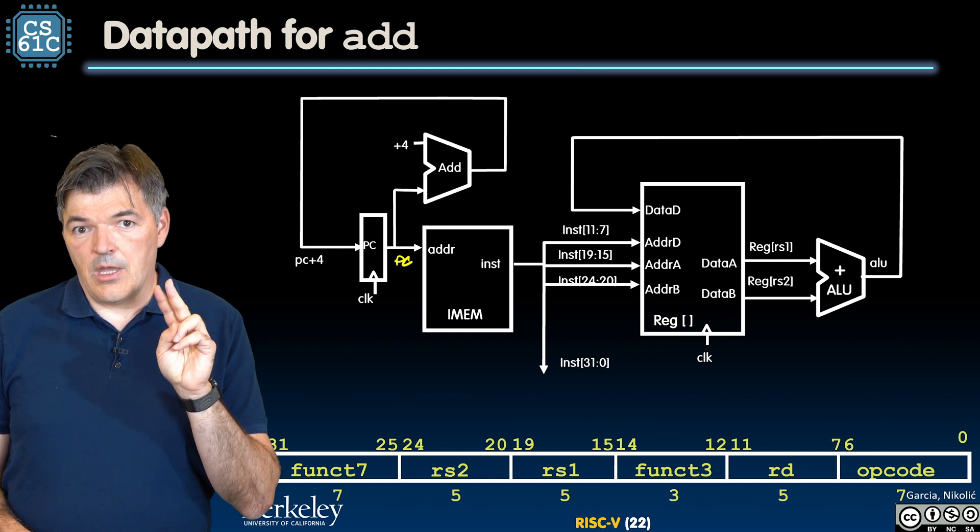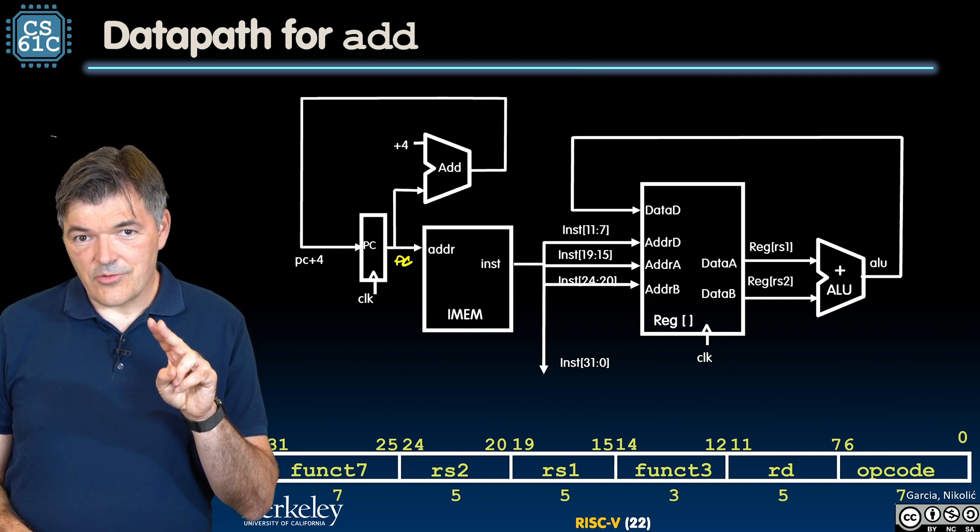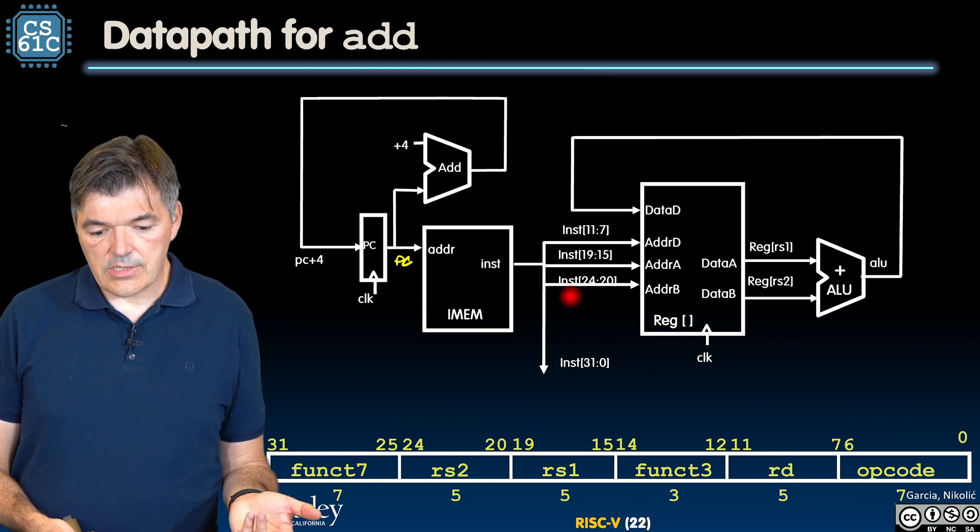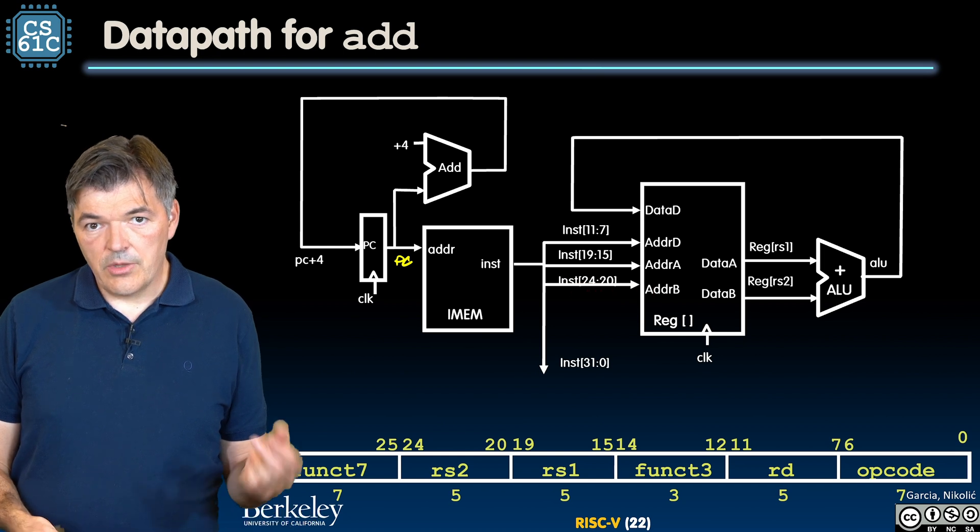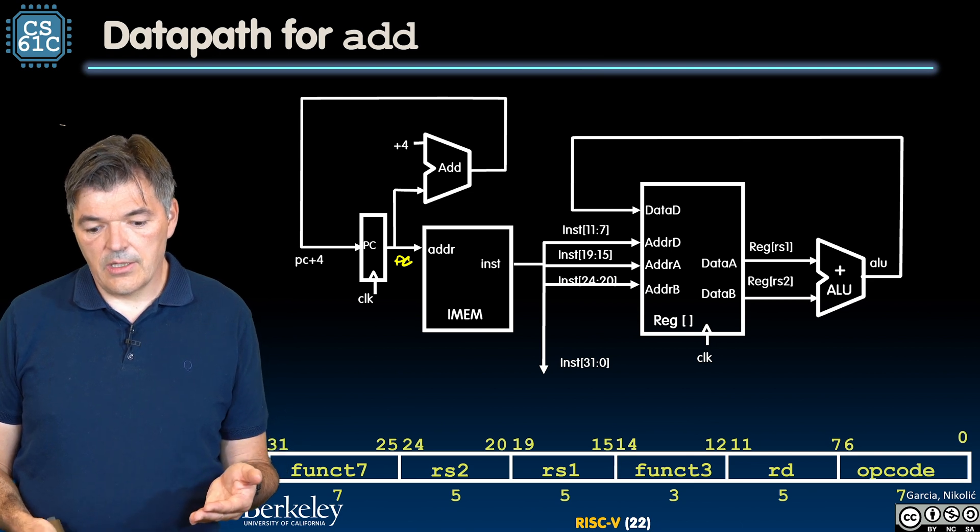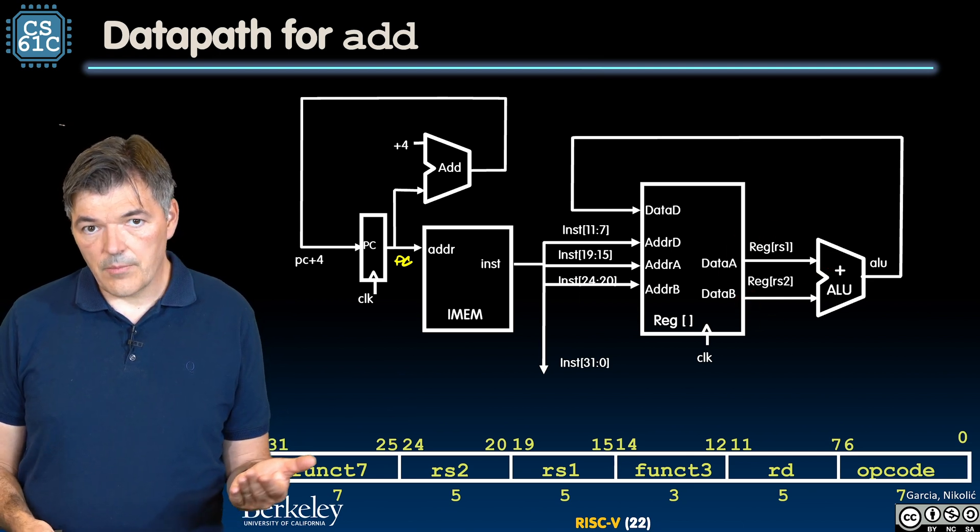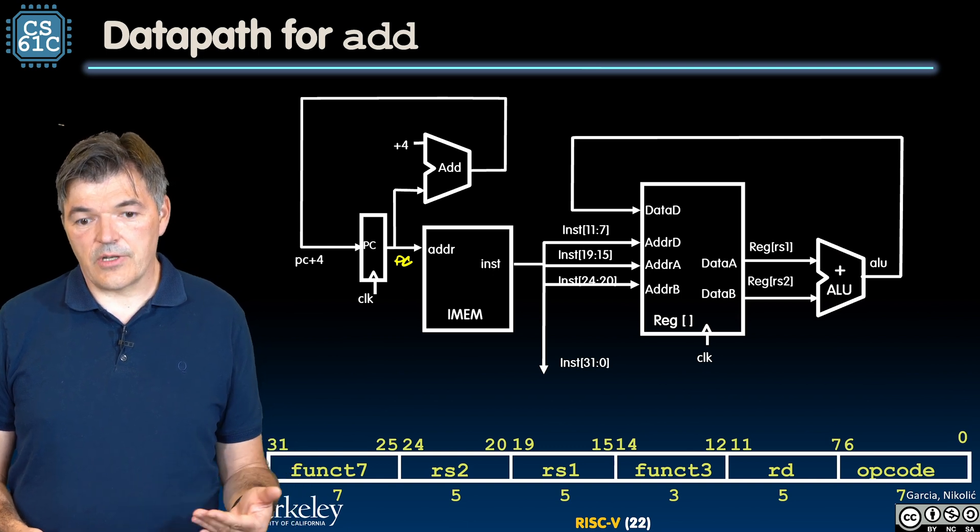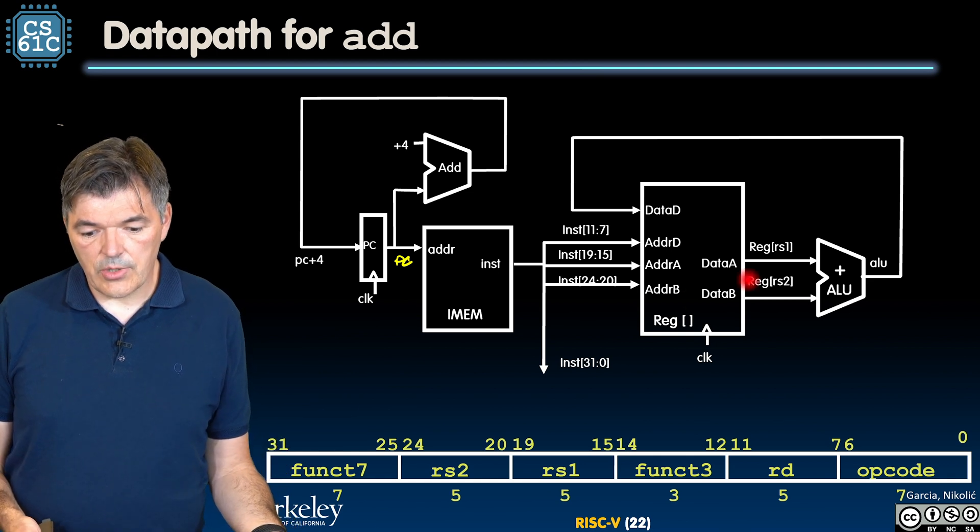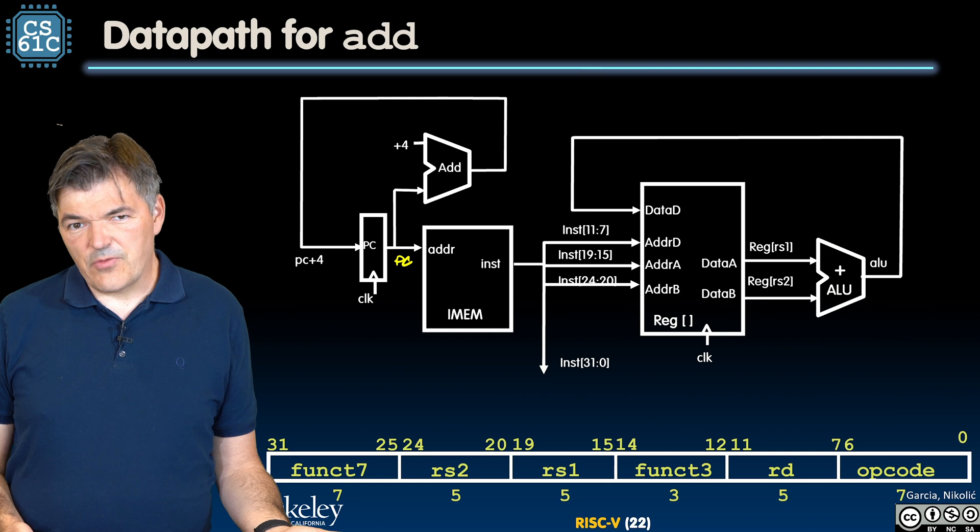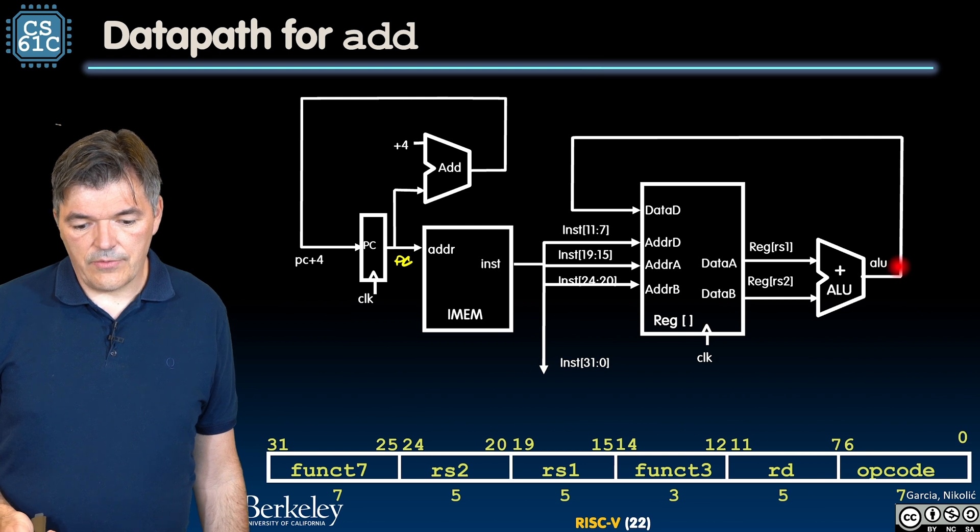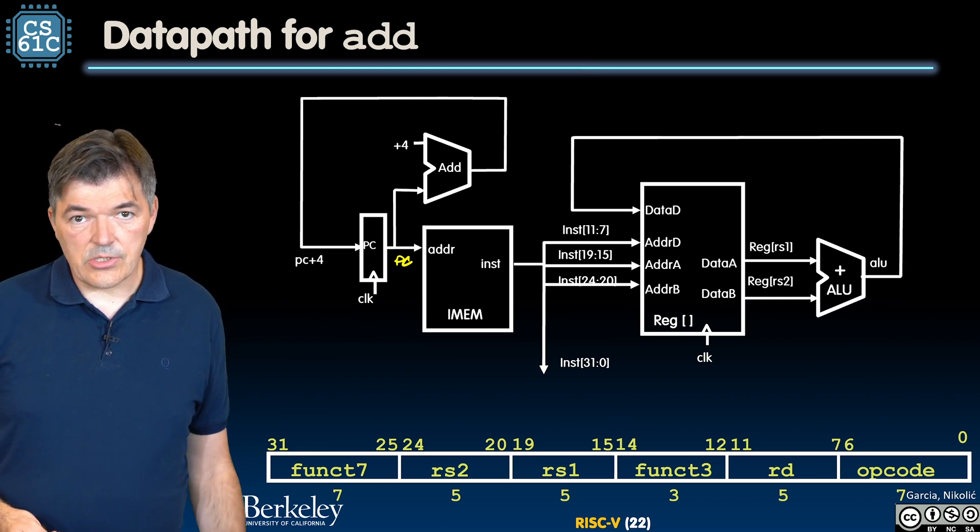We're going to take the second collection of bits, 24 to 20, and hook them up to the address of the second port. As a result, this register file will produce the outputs that correspond to the contents of registers rs1 and rs2. Then all we need to do is to add them together by using our ALU. ALU is configured to be very simple here, to just do addition.